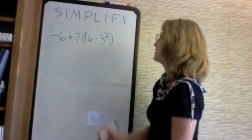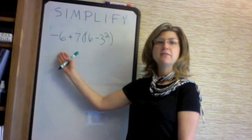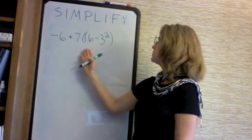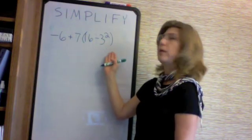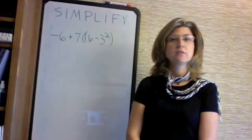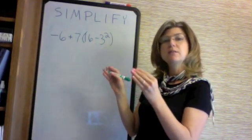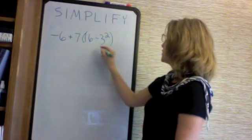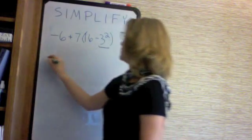The next problem we'd like to work is: simplify negative 6 plus 7 times the quantity 16 minus 3 squared. What should we do first? Remember that working from the inner parentheses out, we simplify our exponents first.